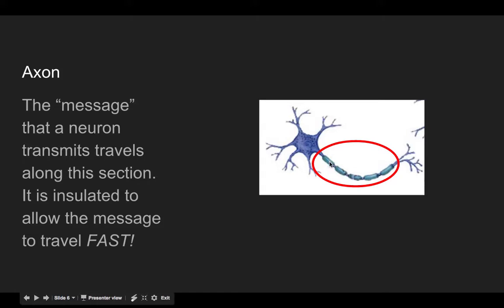This is insulated. Here, you've got these sections. It's called myelin or the myelin sheath. And it's all around here so that that message can travel really, really fast. For example, if you think about it, if you touched a hot stove, you very quickly pull your hand away from that hot stove.